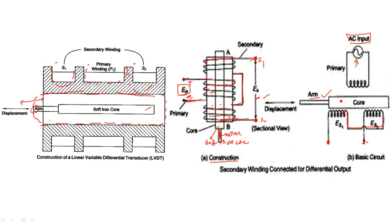Suppose the soft iron core is exactly at the center — between secondary winding one and secondary winding two. The primary winding is where we apply the input voltage. Due to this, an EMF is generated. Since the core is exactly at the center between secondary windings one and two, the same amount of EMF is developed in ES1 and ES2, so ES1 equals ES2.